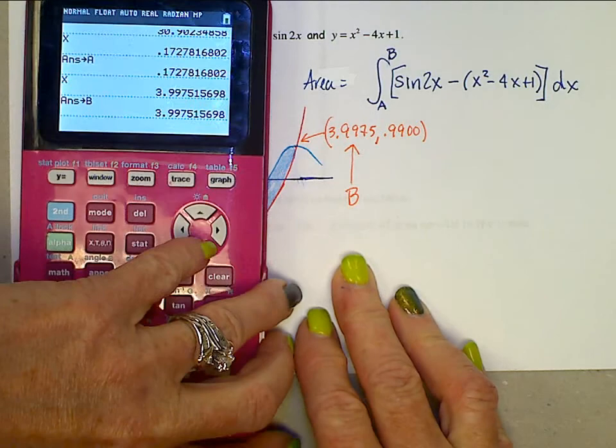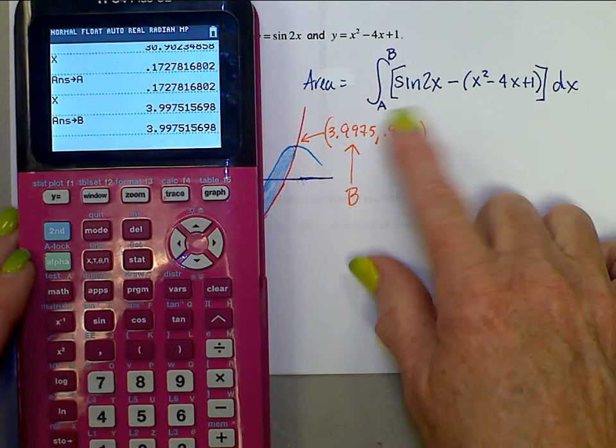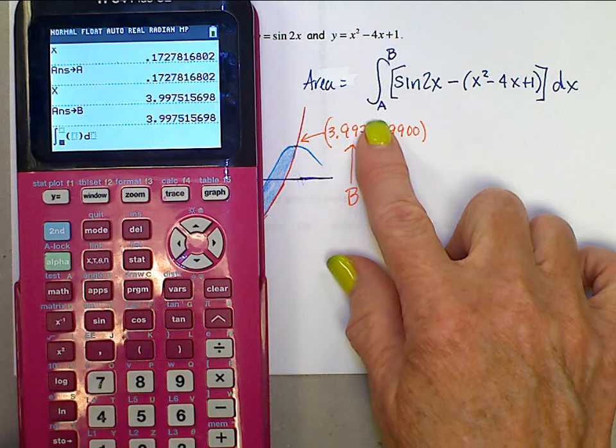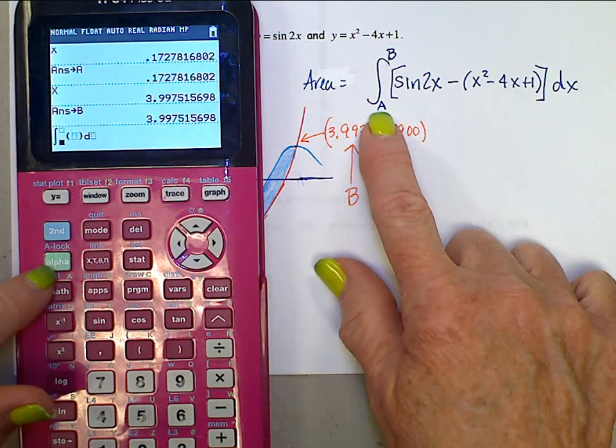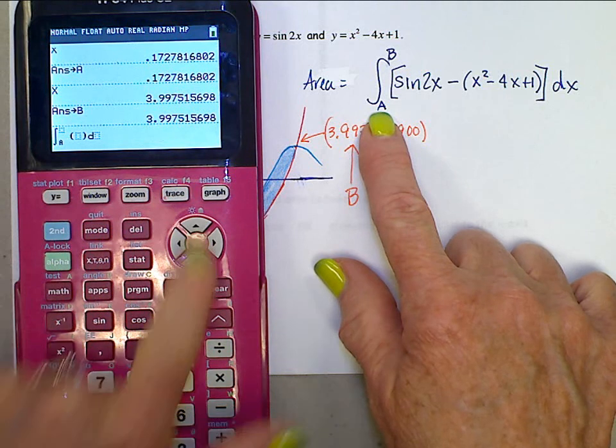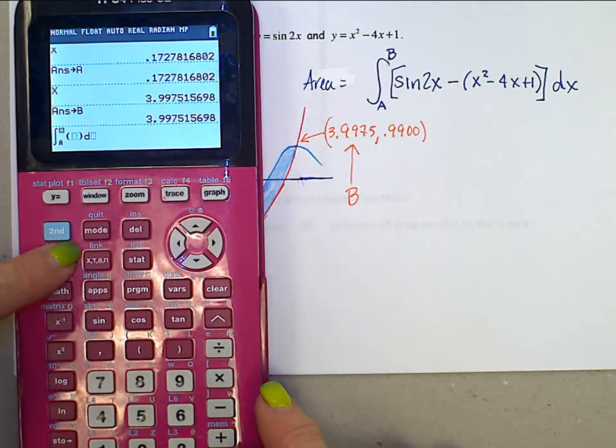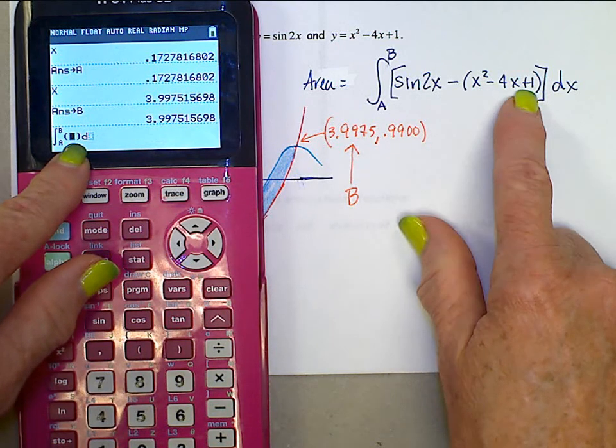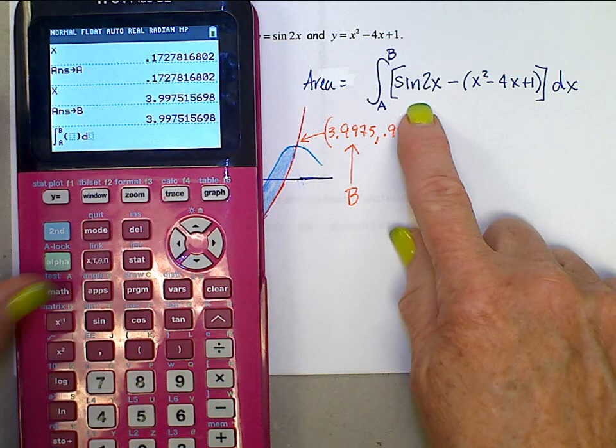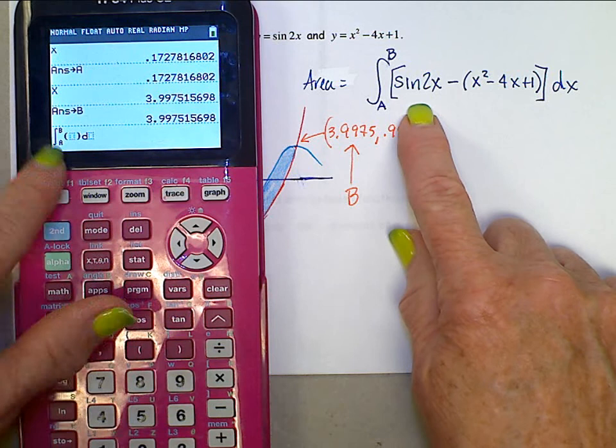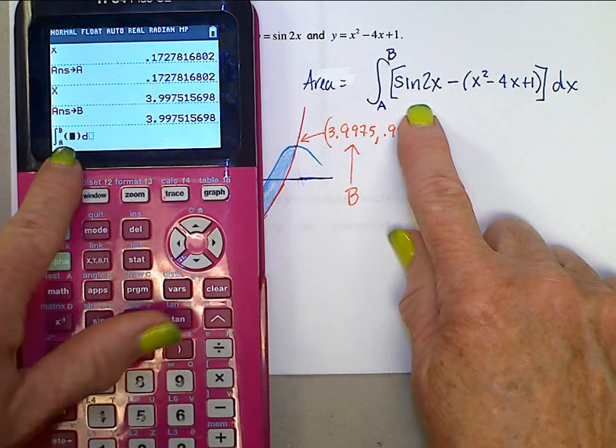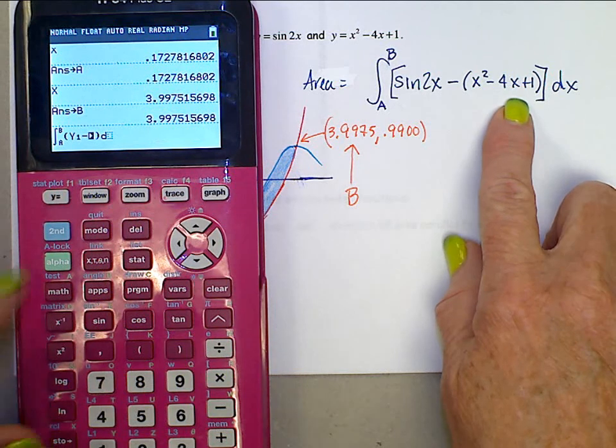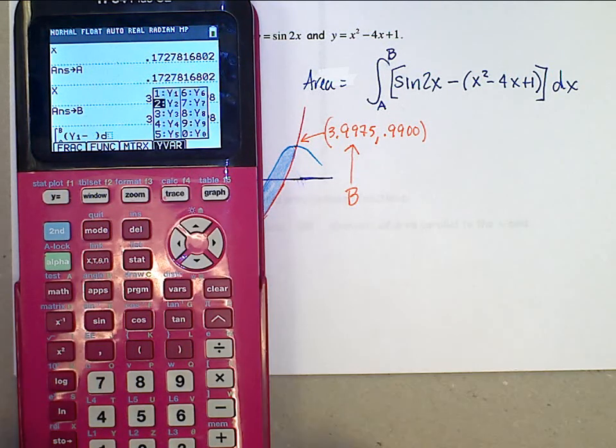To evaluate this integral, then, on your calculator, we're going to use a whole bunch of variables to set this up. So let's do f n i t from A, so you can just pull up your memory bank A, alpha A, up here to memory bank B, so alpha B. And then we want sine 2x minus x squared minus 4x plus 1. Well, where is sine 2x? That was in Y1. So I can just put Y1 in here, so that's alpha F4 Y1, minus this parabola which is in Y2, alpha F4 Y2, dx.